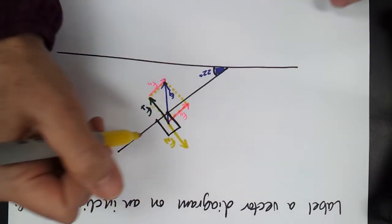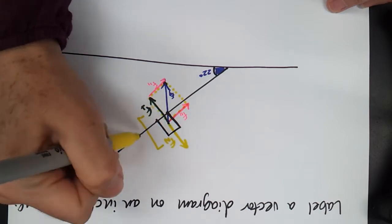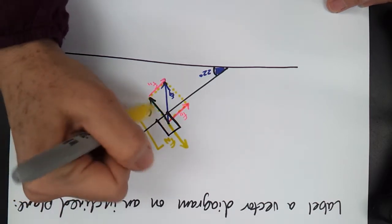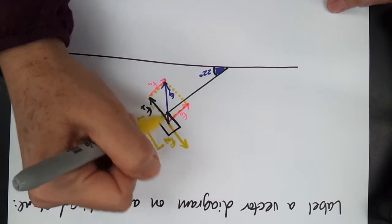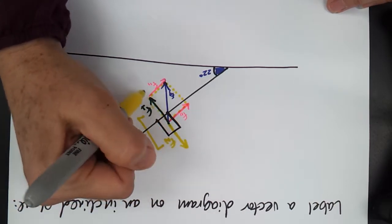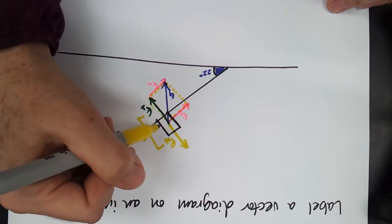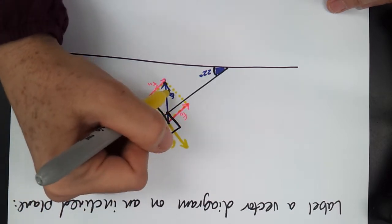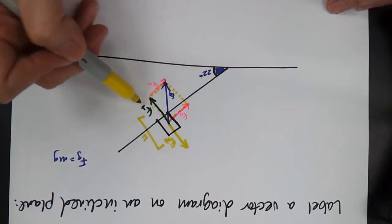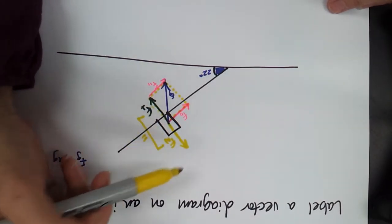Remember that F normal and F parallel or F perpendicular are equal. This down component and this up component have to be even-steven because it's not rising up and it's not sinking still. Remember that the F normal will offset gravity if it's horizontal, but when it's on an incline plane like this, it's really the F perpendicular that's offsetting the F normal. Slight difference.